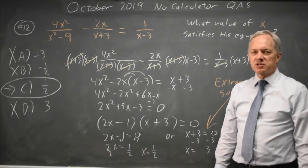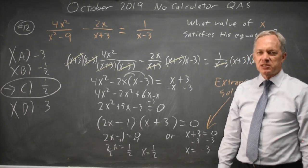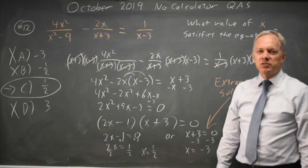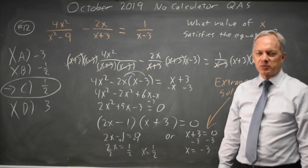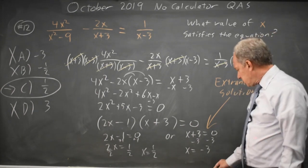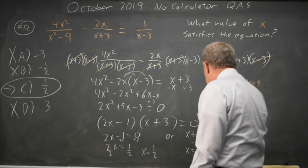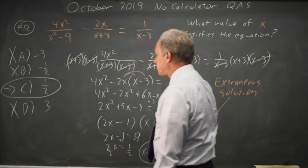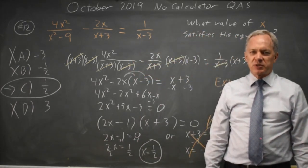If they give you a list of answers, it's often easier to substitute them in and see which ones work. Because when you solve algebraically, you again have to substitute in and see if they work. So, x equals negative 3 is extraneous. We cannot use that one. And the answer is x equals 1 half, which is choice C. Same as I found by substituting in.